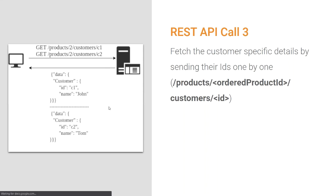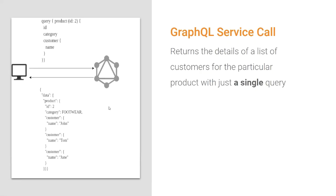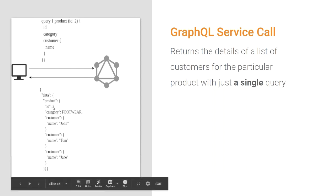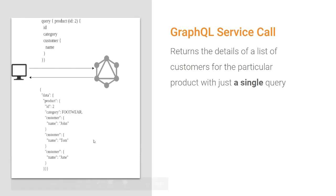So with REST, we had to use three REST API calls. With GraphQL, the most important thing is that you can fetch only the required information using just a single query. You send a query to the product type with the product ID and the nested customer type. Since we need to know the names, we request the name in the nested customer type. Upon execution, we receive the response for product ID 2 and the list of customer names. In other words: ask what you need and get exactly that.